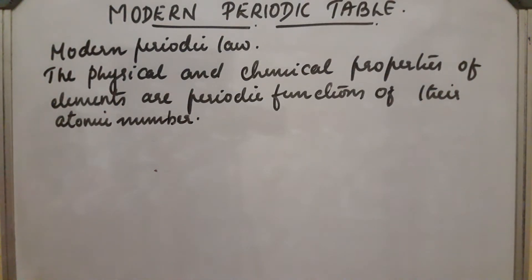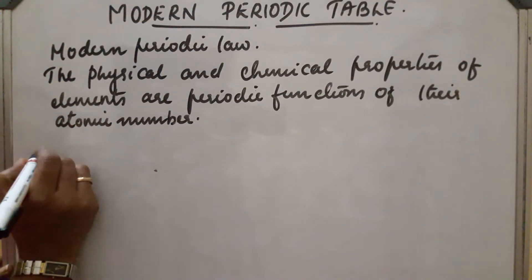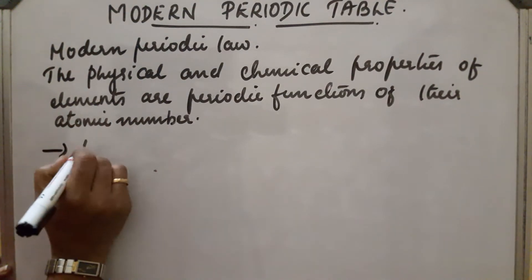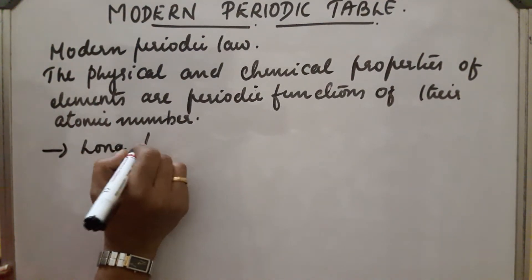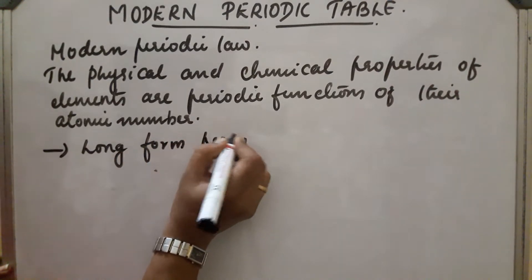Elements are arranged in the increasing order of atomic numbers, and elements with similar properties will repeat after regular intervals. The most commonly used periodic table is the long form periodic table.